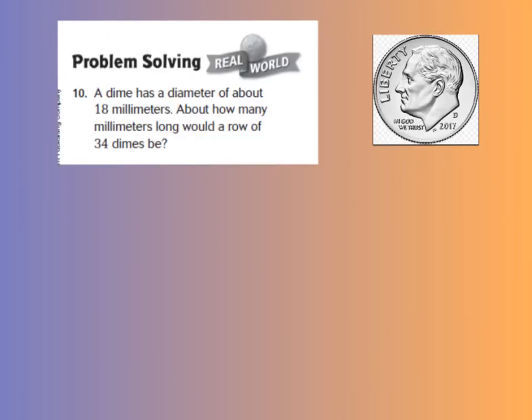Okay, let's jump down to number 10, our problem-solving question. It says, a dime has a diameter of about 18 millimeters. About how many millimeters long would a row of 34 dimes be? Well, we know that one dime has a diameter of 18 millimeters. We see the word about, and we want to know how many a row of 34 dimes would be. So, we need to estimate 18 times our 34 dimes.